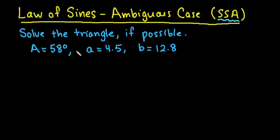So what we are given here is angle A is 58 degrees, little a is 4.5, so this is the side, and side b is 12.8. I'm going to draw a triangle. This is not going to be drawn to scale because I don't know what this triangle is going to look like.